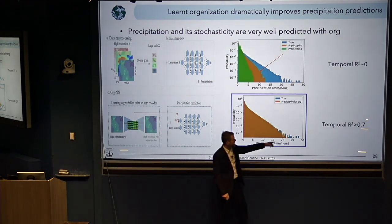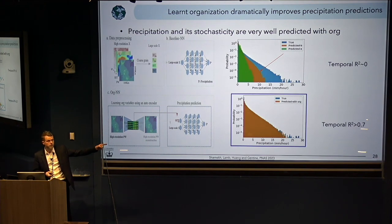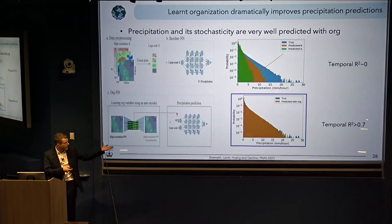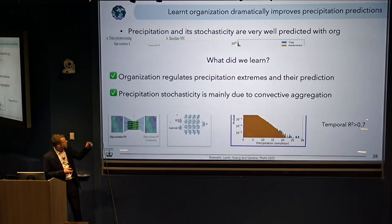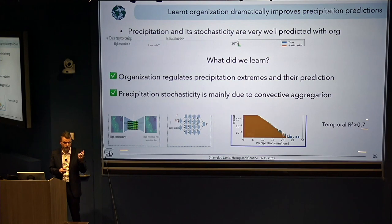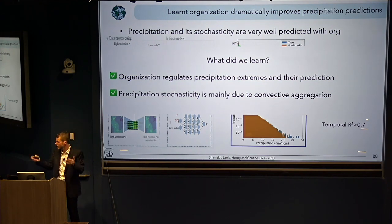The other advantage is that now if we look at the temporal dynamics by including this microstate, now we have very, very good skill. What this means is that precipitation is not stochastic — it's actually something that is highly deterministic and predictable, except the only thing is that we need to have access to this microstate. And if you're interested, you can actually characterize and have an equation for that microstate that you can carry forward. So basically what we learned is that the microstate — what we call the organization — regulates precipitation extremes and is critical to get to those extremes. And it also shows that most of the precipitation stochasticity is actually not stochastic — it's just that you had a higher-dimensional system and you truncated it, and it appears stochastic but it's not. It's a deterministic system that was just truncated in terms of dimensions.